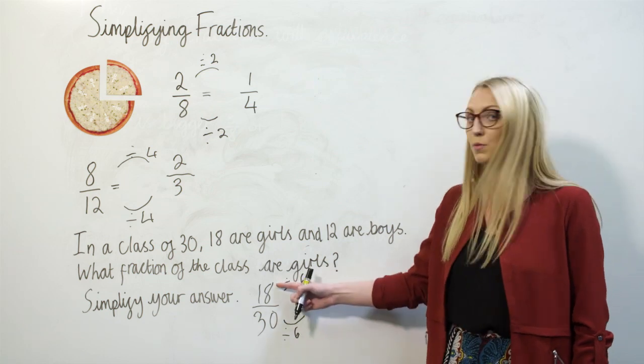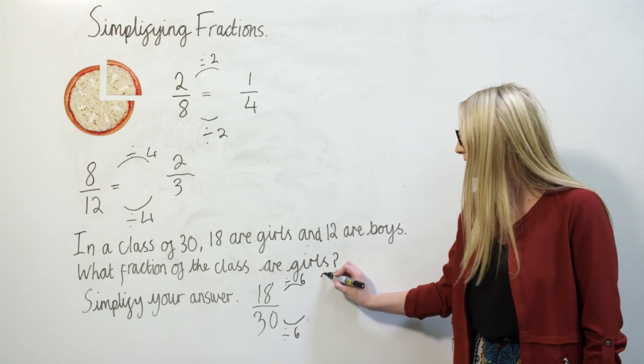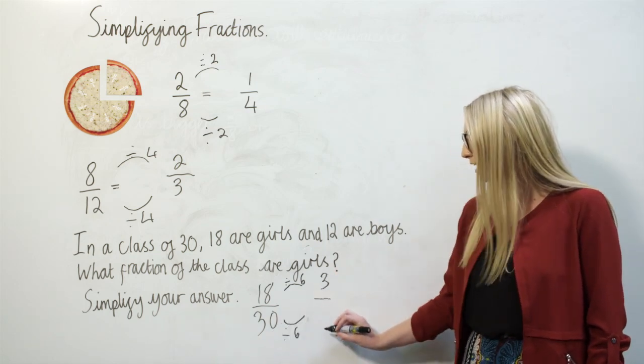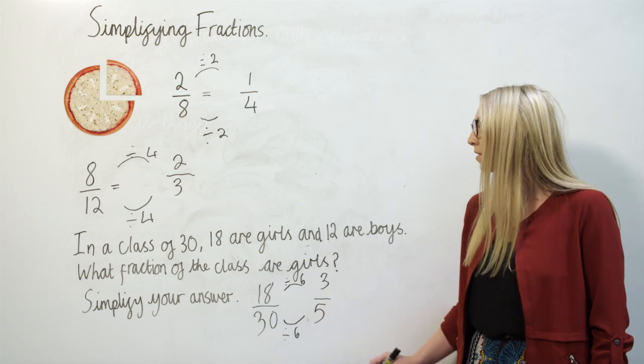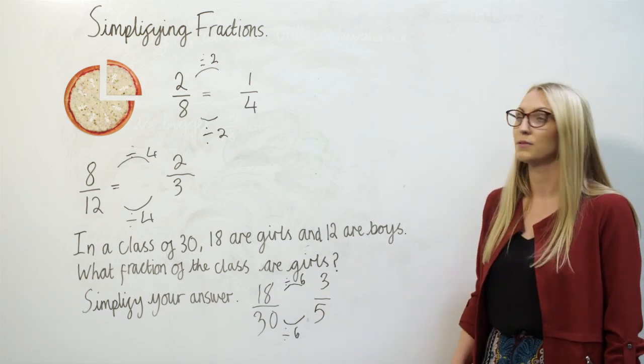We need to remember that what we do to the numerator, we also do to the denominator. 18 divided by 6 is 3, and 30 divided by 6 is 5. So three-fifths of the class are girls, and that's how you simplify fractions.